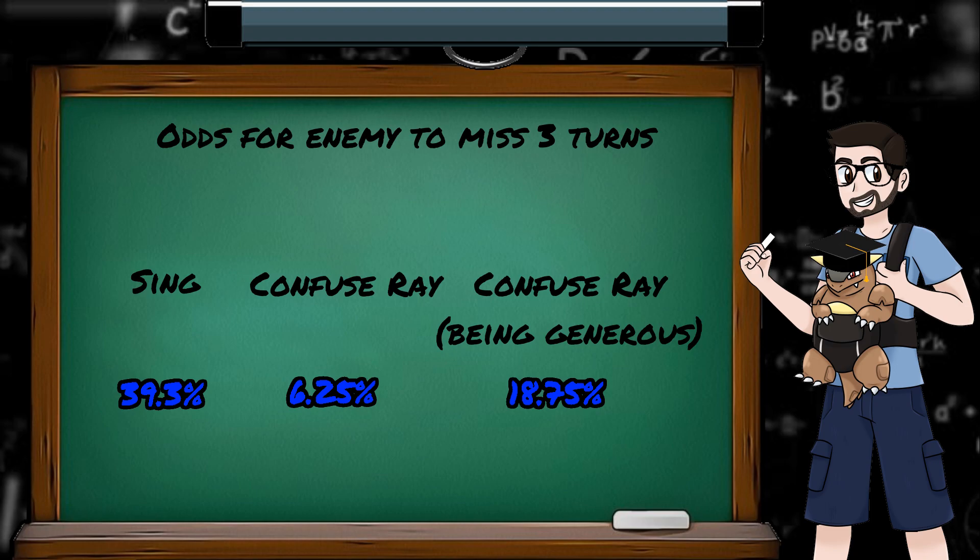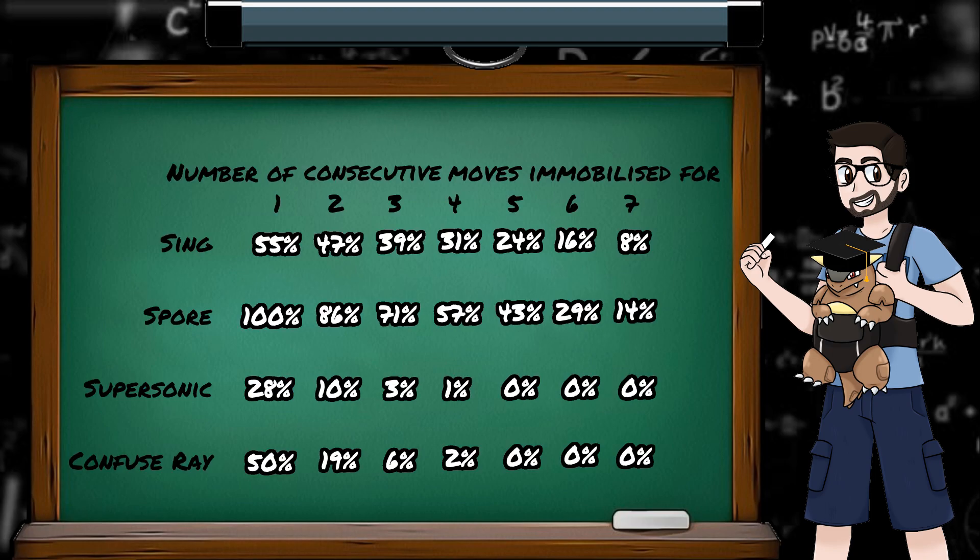Visualising the best and worst sleep and confusion moves, and the probability of making the opponent skip a certain number of turns, we can see the following.